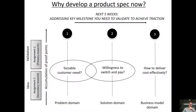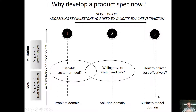The second domain is the solution domain: is your value proposition or solution something interesting enough for people to pay for, as well as switch from their existing solution — which also includes doing nothing? The final milestone is in the business model domain: can you actually deliver this solution to your customers in a way that's cost-effective, and can you generate revenue and profits after subtracting costs from your revenue?